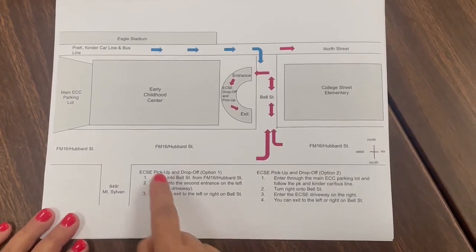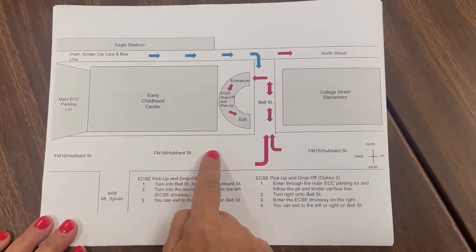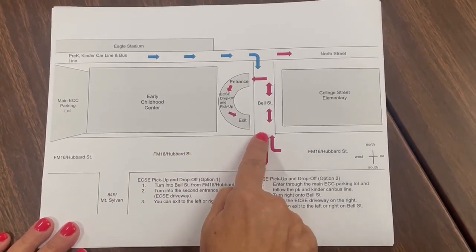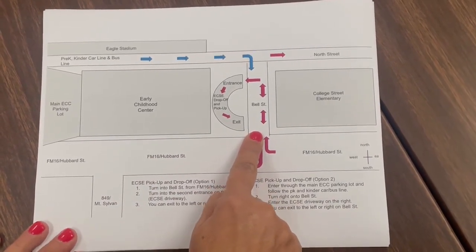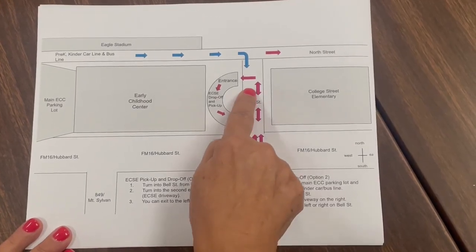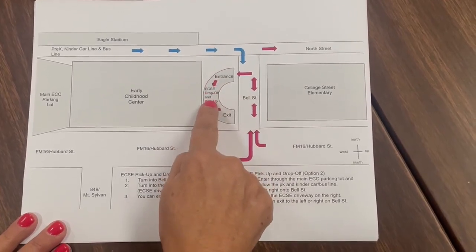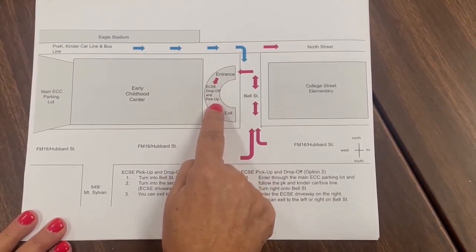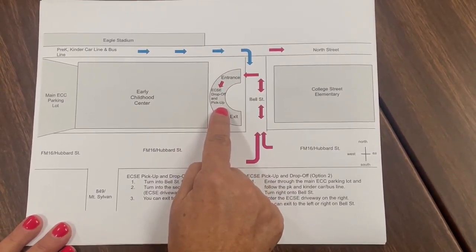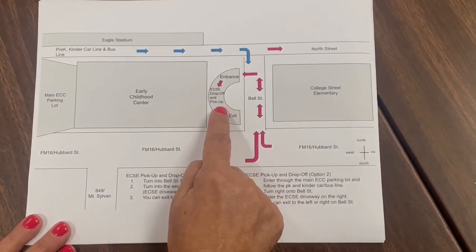Option 1. From Highway 16, turn onto Bell Street by Leslie Kane Realty. You will drive down to the entrance, pull into the driveway, and a paraprofessional will help get your child out of the car and carry or walk him or her to the classroom.